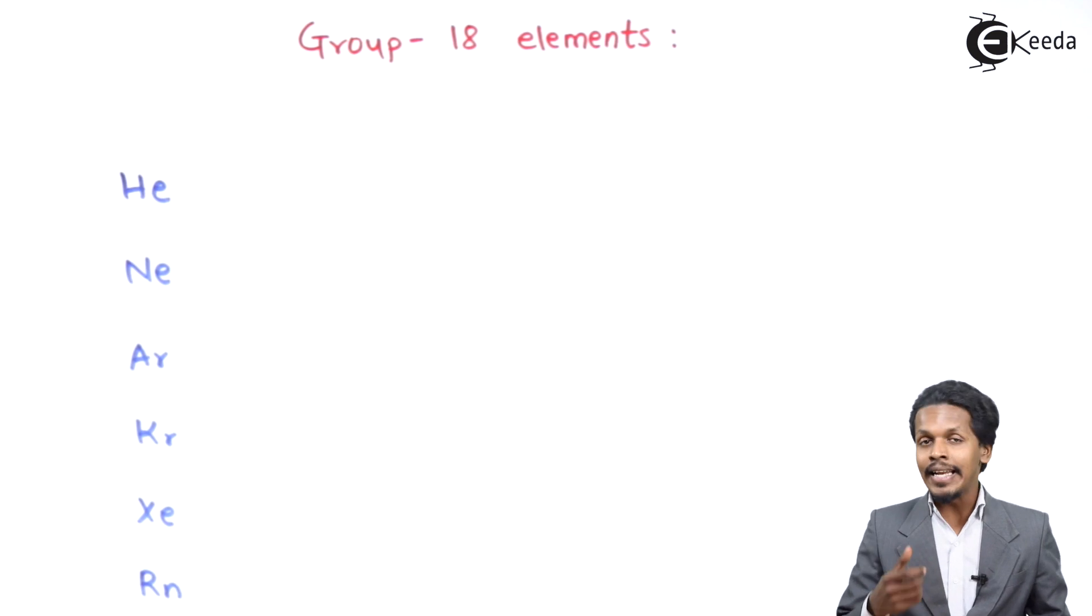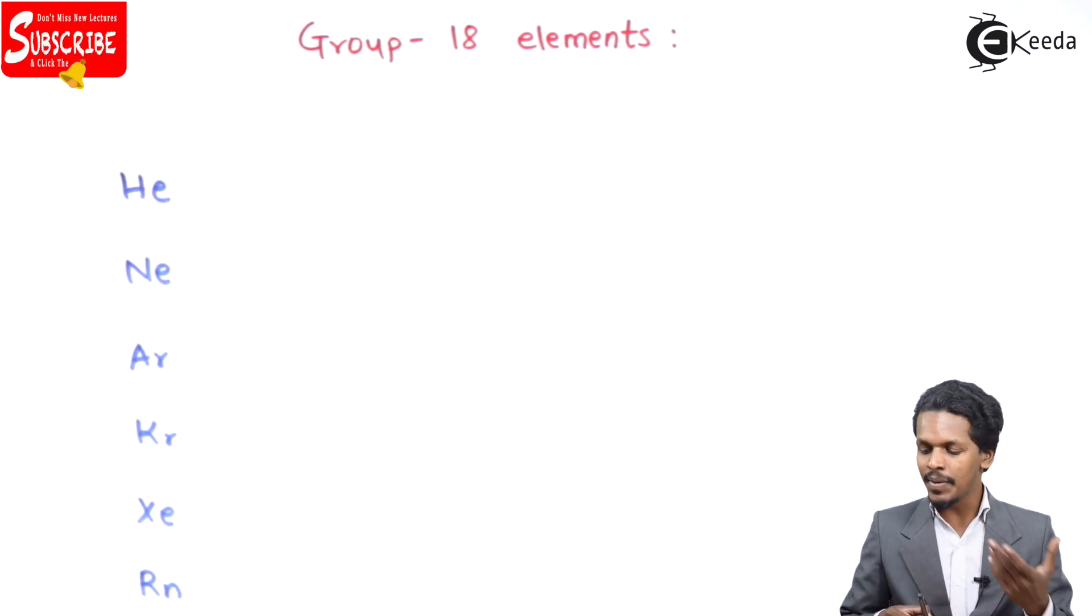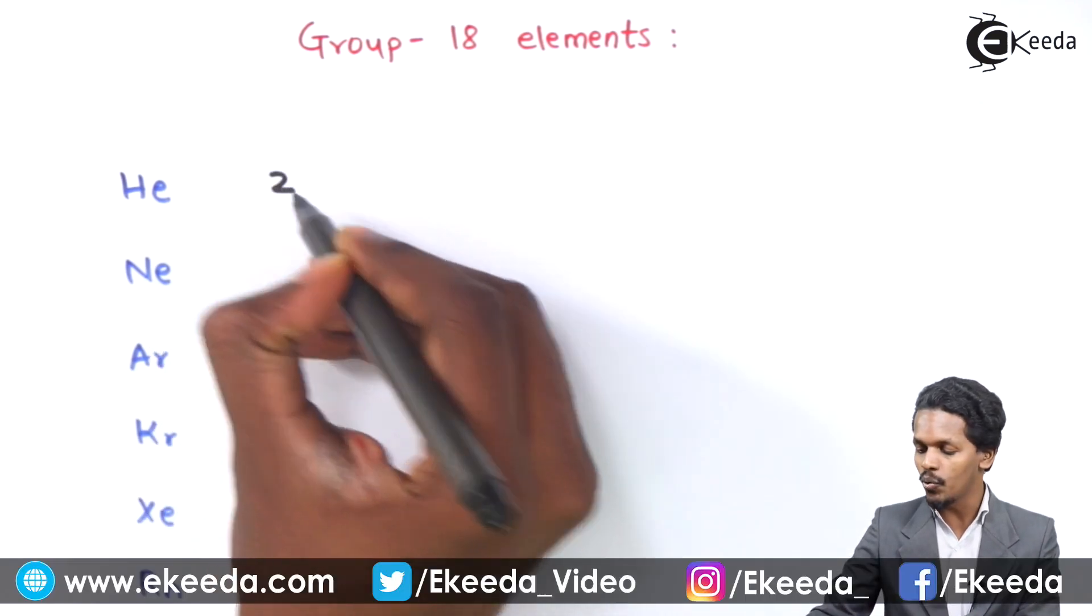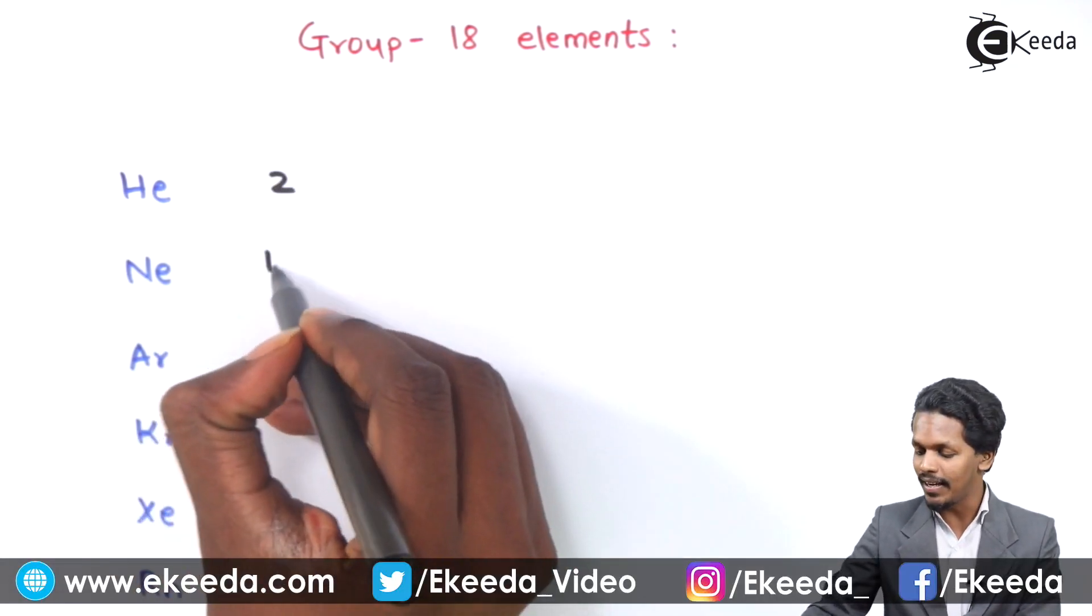So talking about the general electronic configuration, from that we should understand the atomic number. It has been found that Helium has the atomic number of 2. Talking about Neon, it is 10.